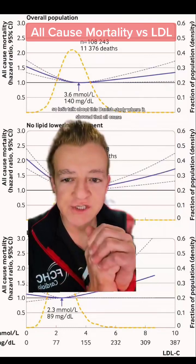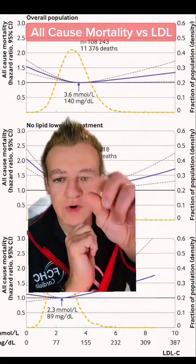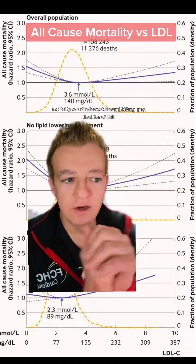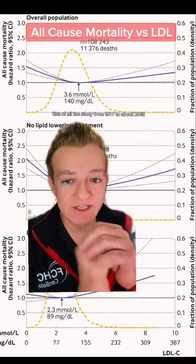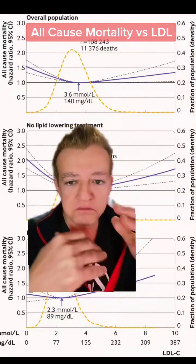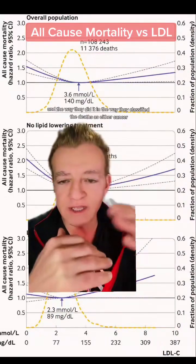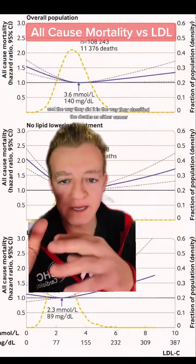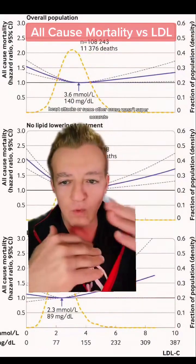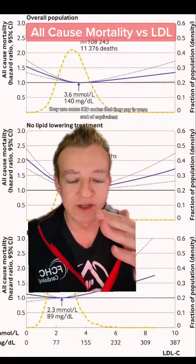Let's talk about this Danish study where it showed that all-cause mortality was the lowest around 140 milligrams per deciliter of LDL. First of all, it was a study from 1977 to about 2015. Statins weren't really a thing back then. The way they classified deaths as either cancer, heart attacks, or some other cause wasn't super accurate — they used some ICD codes that they say were sort of equivalent.